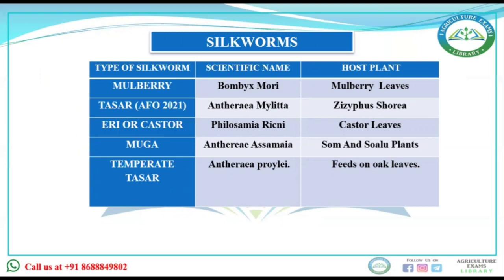The question gave the name Antheraea mylitta and asked for its common name. Eri silk — Attacus (Samia) ricini — its host plant is castor leaves. Mooga silk — Antheraea assamensis — its host plant is som and soalu plants. Temperate tasar — Antheraea pernyi — feeds on oak leaves. The answer to this question is tasar silk.